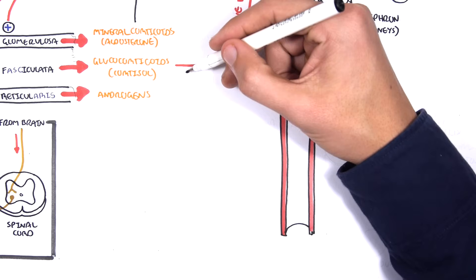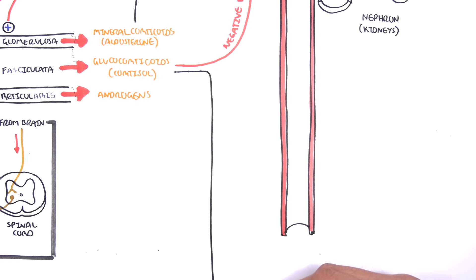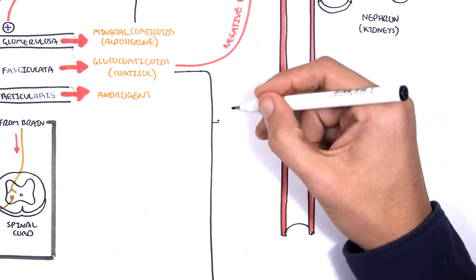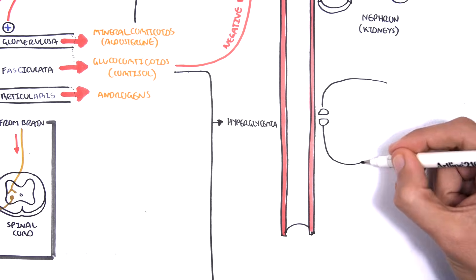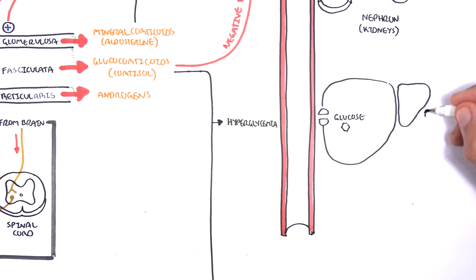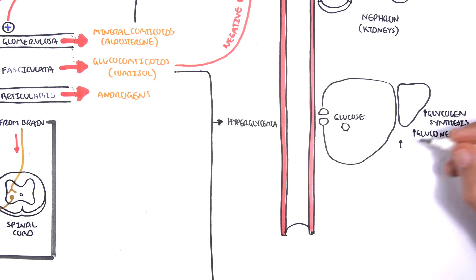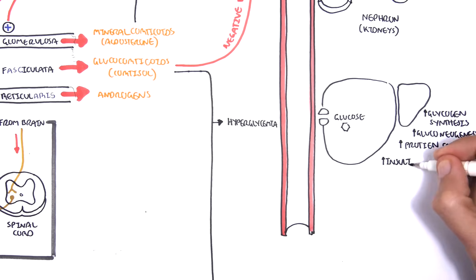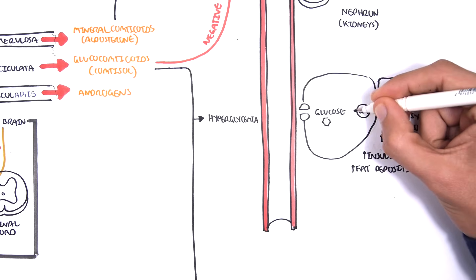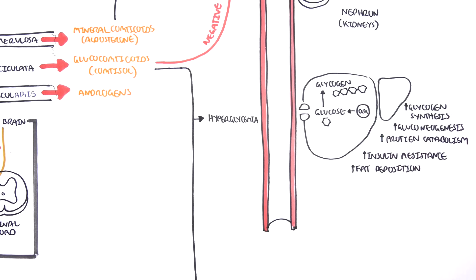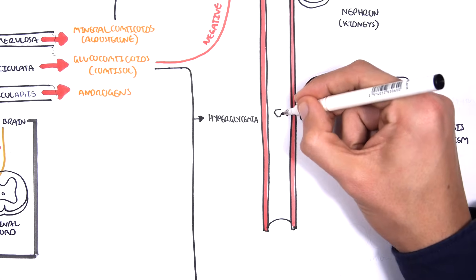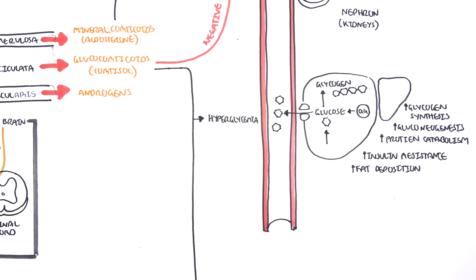Glucocorticoids, primarily cortisol, are secreted by the zona fasciculata and have many functions. They provide negative feedback to the brain, telling it to reduce ACTH secretion. Glucocorticoids also cause hyperglycemia by stimulating the liver to make more glycogen stores, increasing gluconeogenesis, increasing protein breakdown, and inducing insulin resistance, as well as increasing fat deposition. This results in too much glucose being shunted into circulation, or glucose being unable to be taken up by cells due to insulin resistance — leading to hyperglycemia.